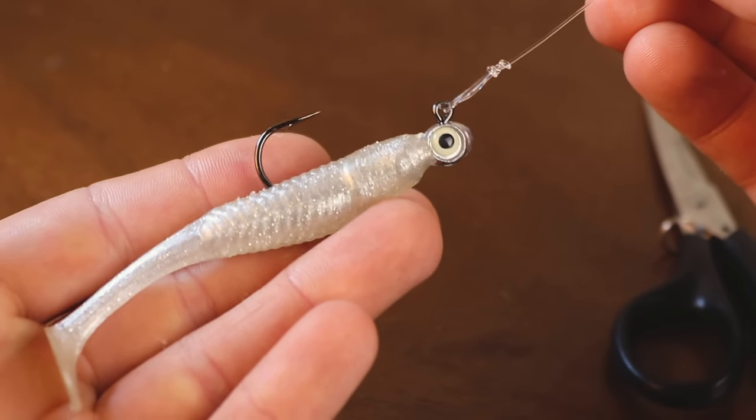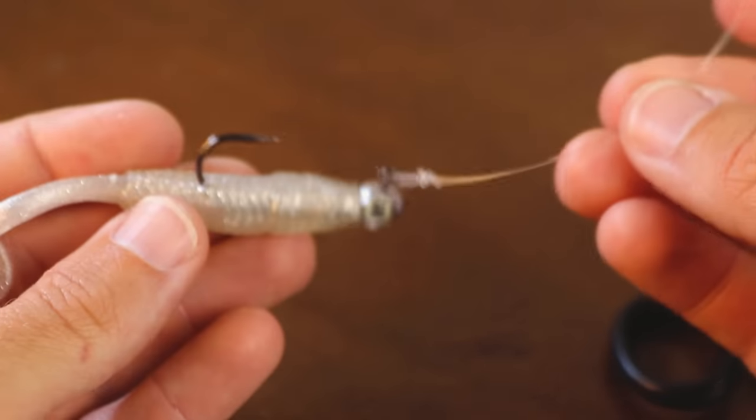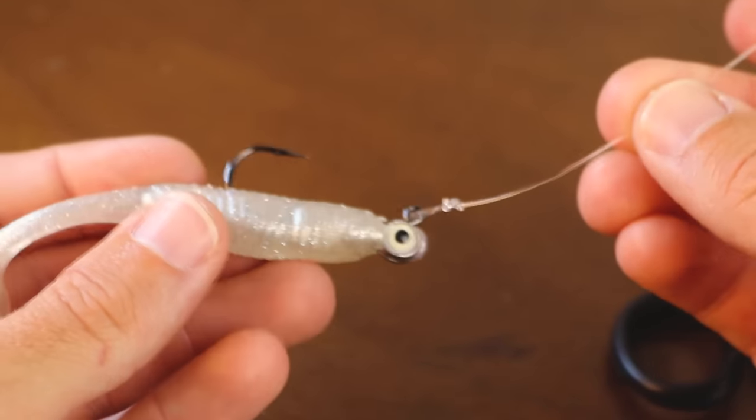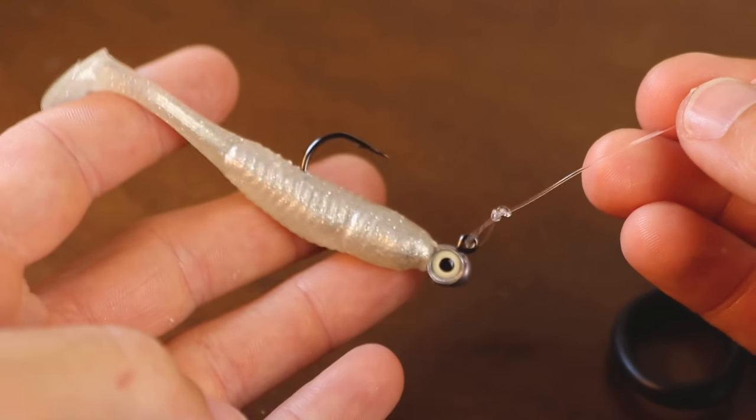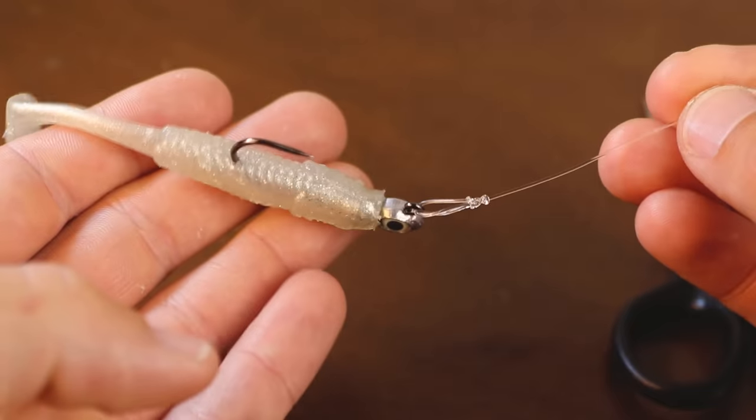I use this for pretty much every single one of my artificial lures. As you're working it, the extra freedom that that loop allows when you're letting a lure drop or you're jigging it. There's so much extra action you get out of using these loop knots.